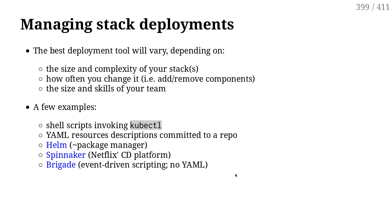There is a trend called GitOps, which is basically infrastructure as code applied to Kubernetes — or rather a generalization of infrastructure as code. The idea is that you store all the YAML for your application in a Git repo. When you want to make changes, instead of doing kubectl this, kubectl that, kubectl edit, you make changes in the repo, submit the pull request, and when you merge the pull request the changes get applied. That lets you track the changes made to the environment using the Git history.